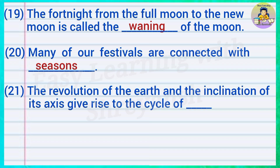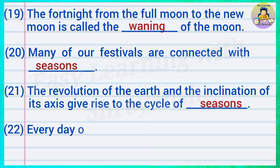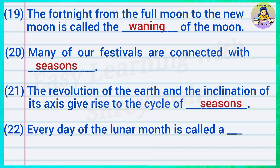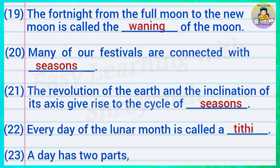Twenty-one: The revolution of the earth and the inclination of its axis give rise to the cycle of — answer: seasons. Twenty-two: Every day of the lunar month is called — answer: tithi. Twenty-three: A day has two parts — day and — answer: night.